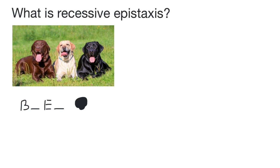But what if we have two recessive alleles at the B locus and at least one dominant allele E? This recessive allele b is not as efficient to produce black pigment as the dominant allele. So two recessive alleles bb means that this is going to be a brown color, and at least one dominant allele E means that it's going to be deposited. So we are going to see this brown color in dogs with that genotype.